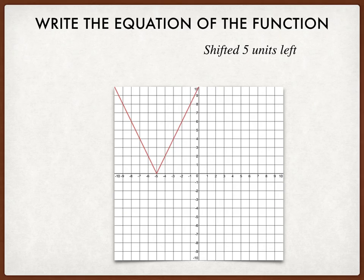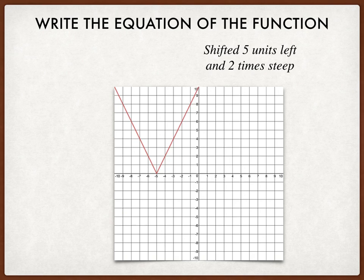Therefore, the 2 times as steep, the 2 gets multiplied by the absolute value bars. And because I've shifted 5 units to the left, it should be 2 times the absolute value of x plus 5.